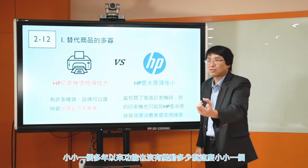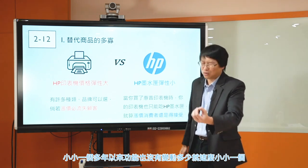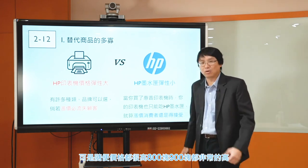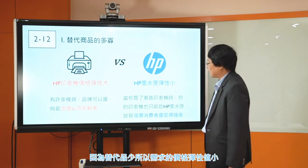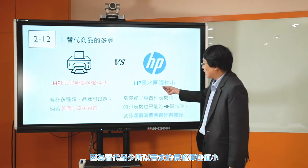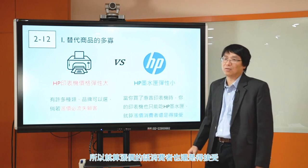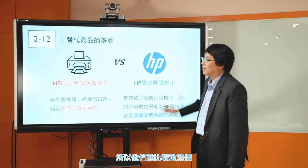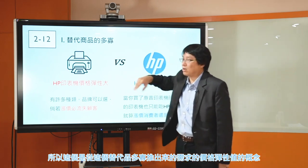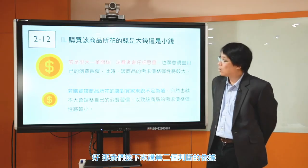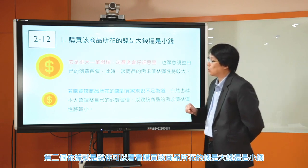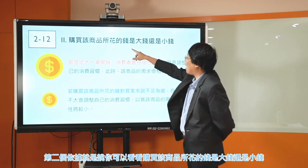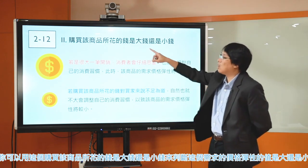這就造成一個有趣的現象：HP印表機的需求價格彈性值比較大，涨价容易流失客戶，所以一般你就會看到印表機一台一堆功能，市場上賣一千塊兩千塊非常便宜。可是墨水匣完全不一樣，HP、Canon、Epson的墨水匣，小小一個，多年來功能也沒有變動多少，可是隨便價格都很高，800塊900塊。因為替代品少，需求價格彈性值小，就算漲價消費者也還是得接受，所以比較敢漲價。